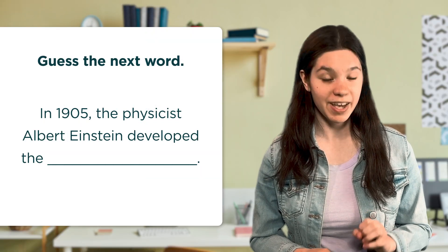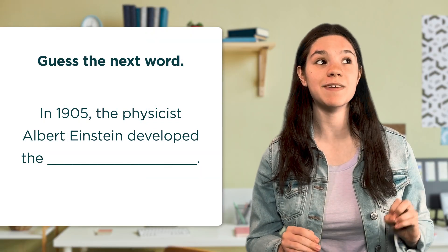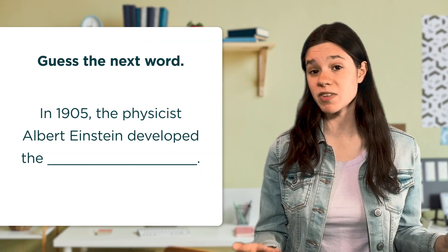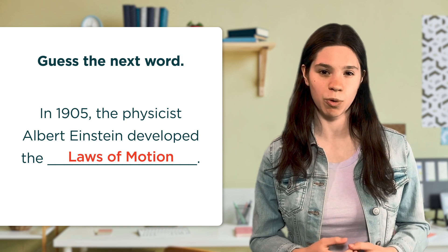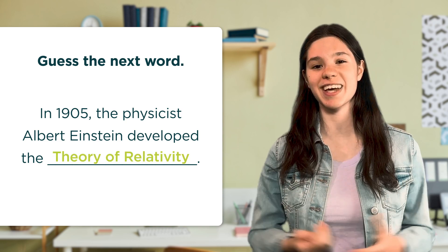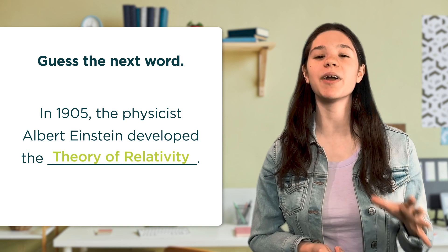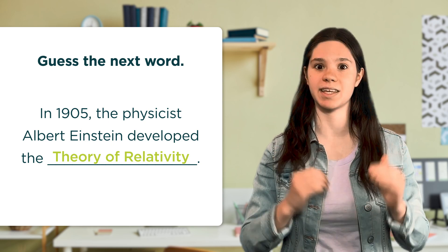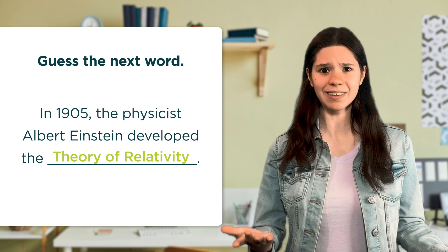Humans develop step-by-step processes called algorithms to train the AI models. AI models follow the algorithms to practice making predictions. For example, an algorithm gives a model part of a sentence and asks it to guess the next word. The algorithm checks the guess and corrects mistakes. The model practices the task millions of times, and it learns.